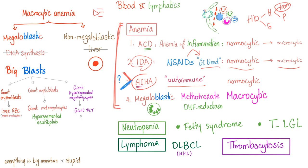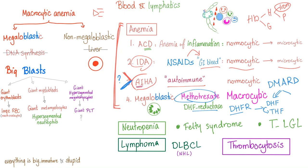Next we have megaloblastic anemia. Why? Because Rheumatoid arthritis patients need DMARDs — disease-modifying anti-rheumatic drugs — both synthetic and biologic. Synthetic such as Methotrexate. Methotrexate will inhibit dihydrofolate reductase, or DHFR. When it inhibits DHFR, dihydrofolate cannot be converted into tetrahydrofolate. Tetrahydrofolate is now gone — this is called folate deficiency. This will lead to megaloblastic anemia, which is a macrocytic anemia.